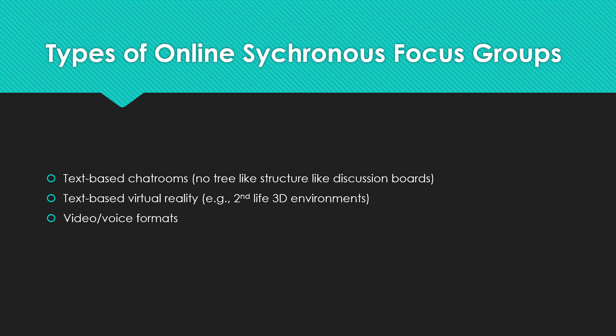Synchronous online focus groups have a lot in common with face-to-face focus groups and are typically conducted at a pre-arranged time. Participants have the opportunity to react to others' comments in real time, which can really facilitate the conversation and at times be downright chaotic. There are three types of synchronous online focus groups: text-based chat rooms, text-based virtual reality, and voice/video.